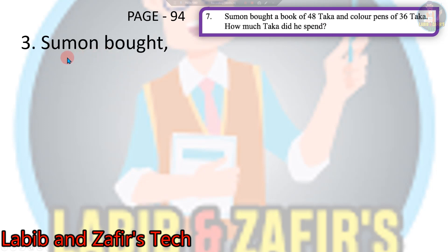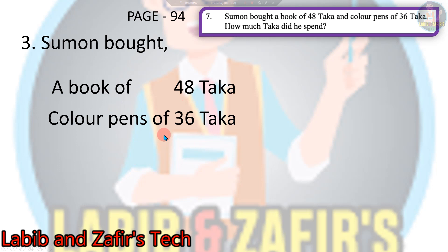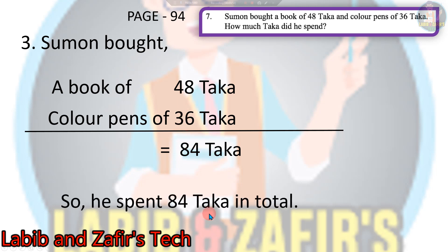So let's see the answer. Number 3: Shumun bought a book for 48 taka, then color pens for 36 taka. We have to add: 48 plus 36. That is 8 plus 6 equals 14, 1 in hand, 3 plus 1 equals 4, then 4 plus 4 equals 8, that is 84 taka. So he spent 84 taka in total. This is the third word problem.